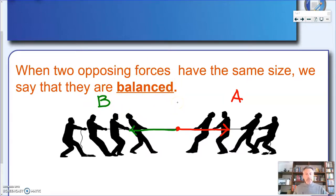And it's pretty obvious what happens when the forces are balanced. So we have a rope. The two teams are pulling with the same size force, with the same strength. The rope will not move. And nor will be the teams.